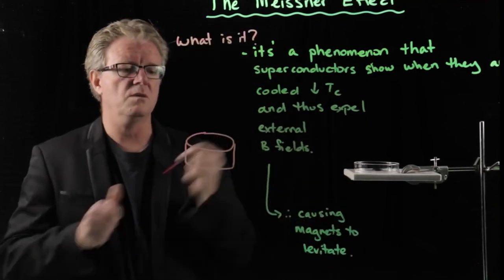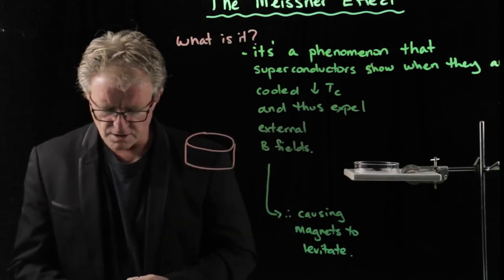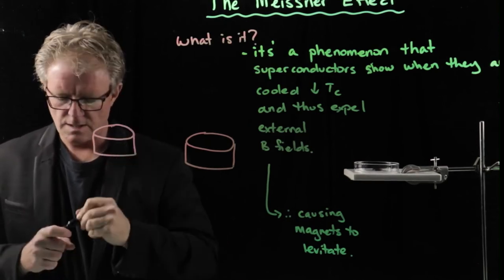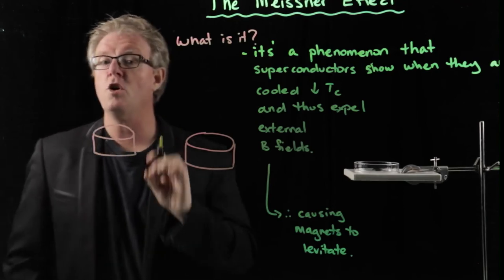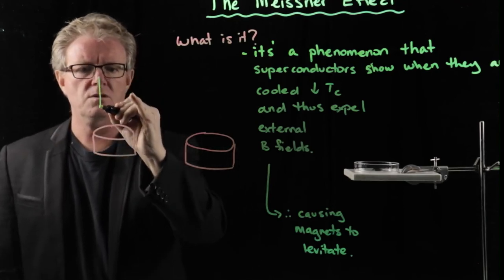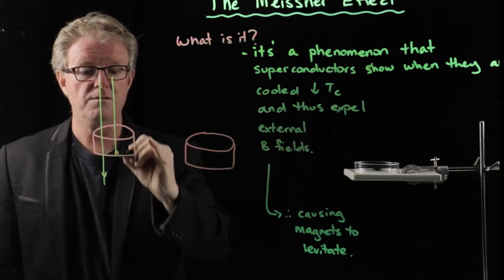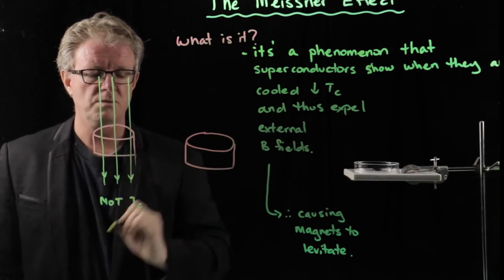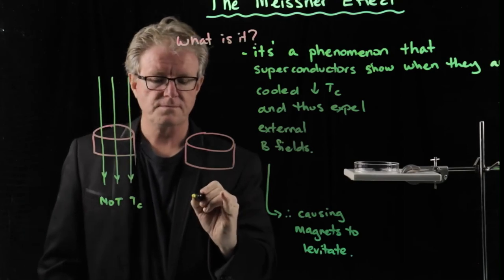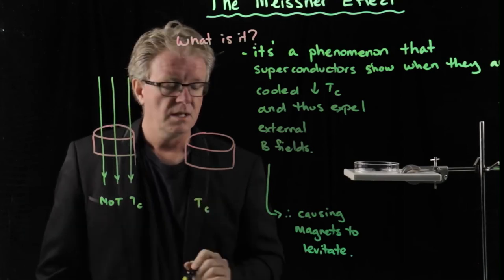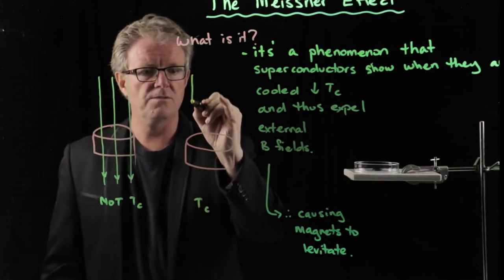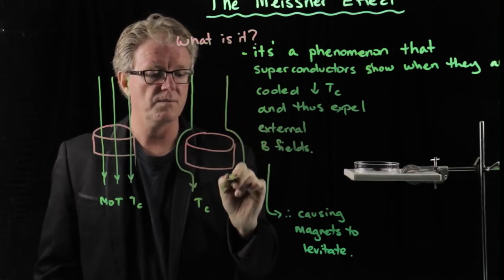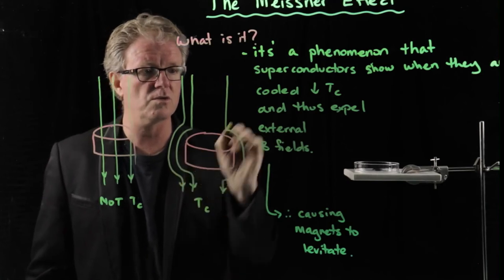So what does that mean in terms of a picture here? Here we have a superconductor, and I'm going to draw another one here as well. So two superconductors. This one here is not at its critical temperature. So if it's not at the critical temperature, we can draw the magnetic fields going through it. The magnetic field lines, I should say. So there's the magnetic field lines. This is not at its critical temperature. However, if we cool it down, this is at the critical temperature. And this means that the external magnetic fields are going to be repelled by the superconductor. So they do not go in and through the superconductor.